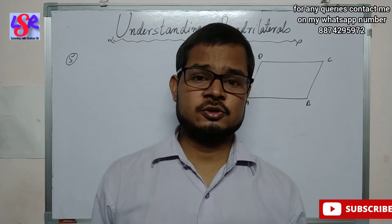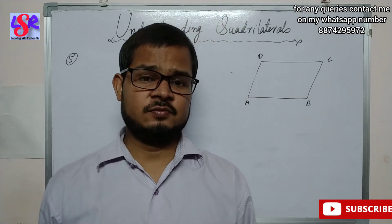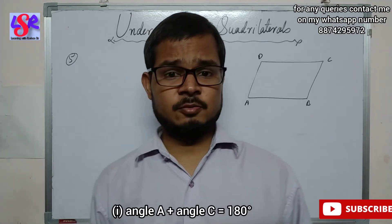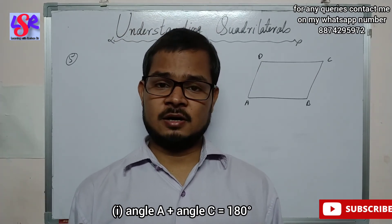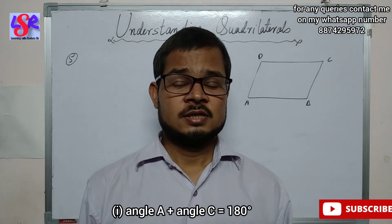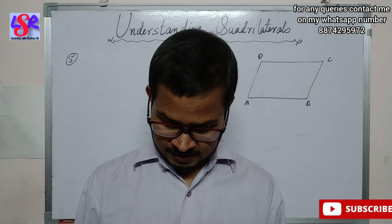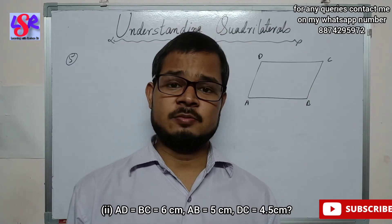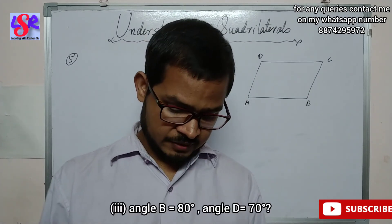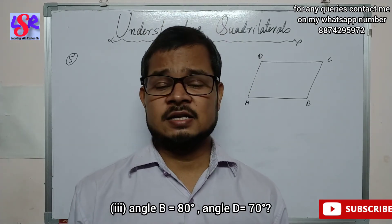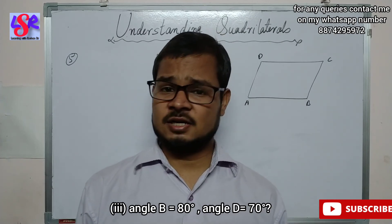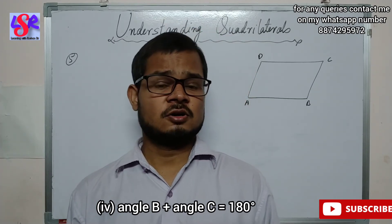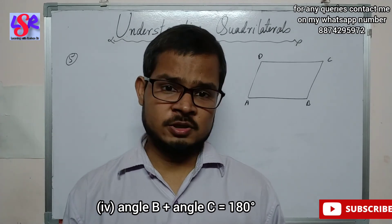In question 5 we check whether each given condition is sufficient for a parallelogram. The first condition — sum of angle A and C equals 180 degrees — can be possible but need not be, since opposite angles must also be equal. The second — AD equals BC equals 6 cm but AB equals 5 and DC equals 4.5 — cannot be a parallelogram as opposite sides are not equal. The third — angle B equals 80° and angle D equals 70° — is also not possible since opposite angles are not equal. The fourth — sum of angle B and C equals 180° — can be possible but is not sufficient alone.